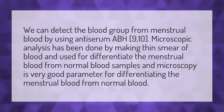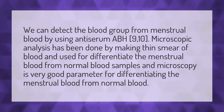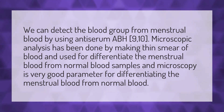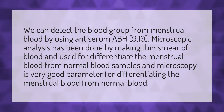We can detect the blood group from menstrual blood by using antiserum ABH9-10. Microscopic analysis has been done by making a thin smear of blood, used to differentiate the menstrual blood from normal blood samples. Microscopy is a very good parameter for differentiating menstrual blood from normal blood.